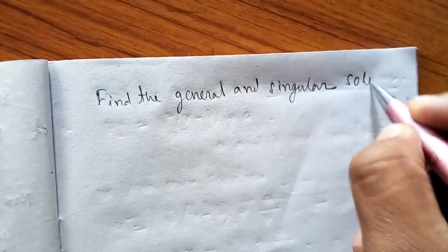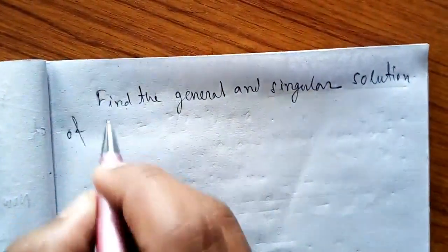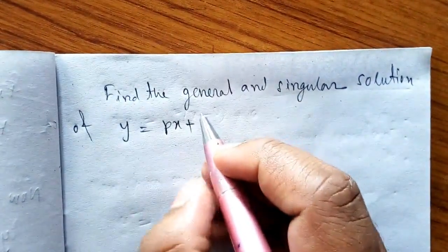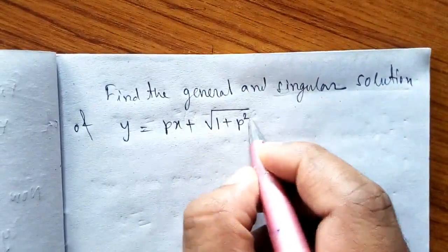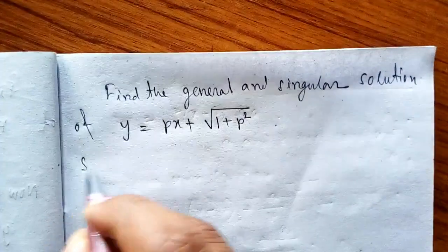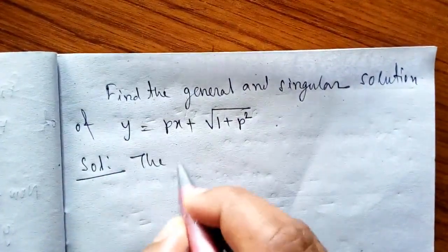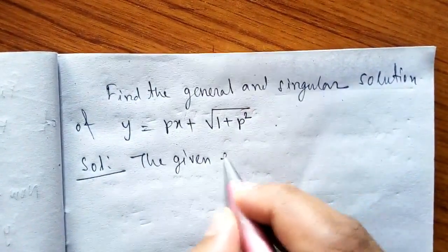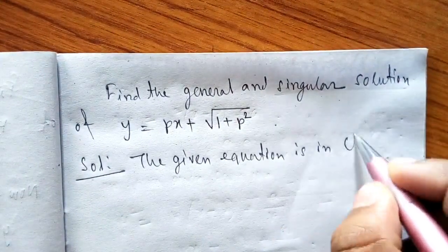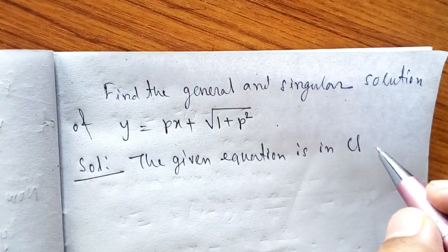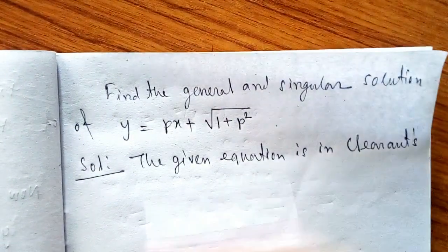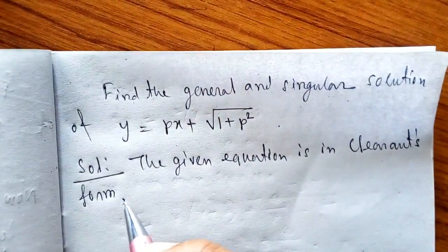Find the general and singular solution of the equation Y = px + √(1 + p²). The given equation is in Clairaut's form.